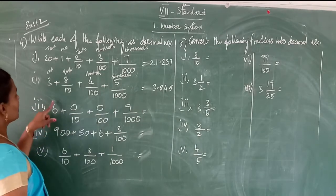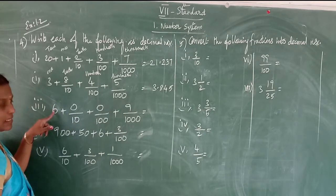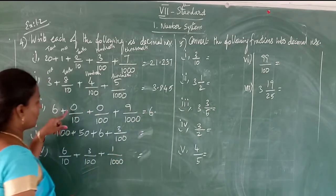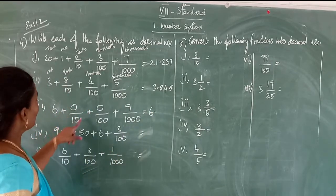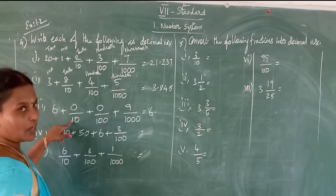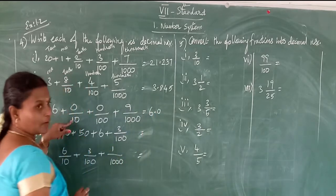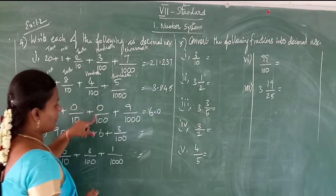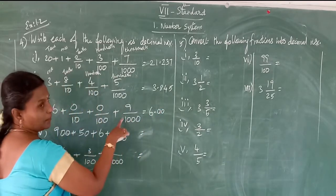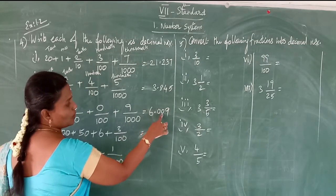See the third one. The whole part has only one digit in the ones space — that is 6. Now in the decimal part there is no tenths place so put zero, hundredths place is also zero, and the thousandths place is 9. So 6.009.